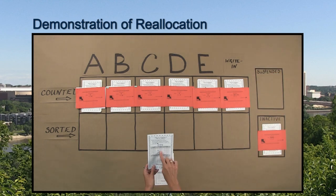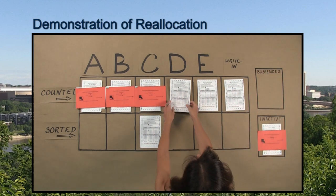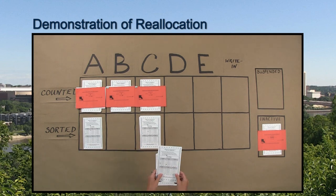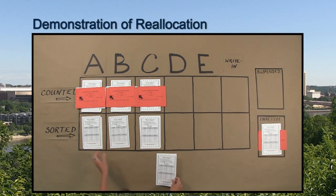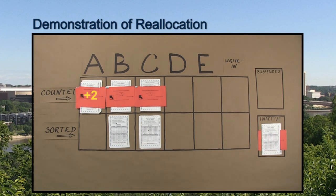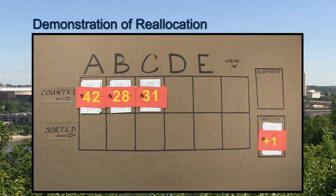The suspended ballots will be reallocated first. Then the ballots for the eliminated candidates are reallocated. After the first reallocation, the sorted ballots are counted and then added to the first choice piles to determine if a candidate has met the threshold to win the election. Candidate A gained 2 votes and now has a total of 42 votes. Candidate B gained 2 votes for a total of 28 votes. Candidate C gained 7 votes for a total of 31 votes. There was one ballot that could not be reallocated, so the total of inactive ballots increases to 3.